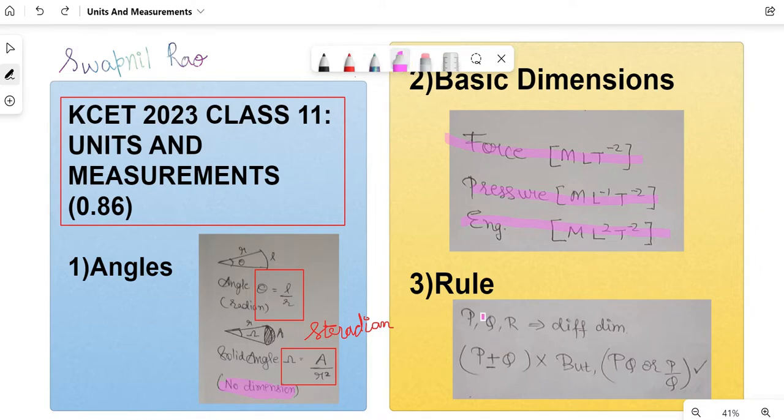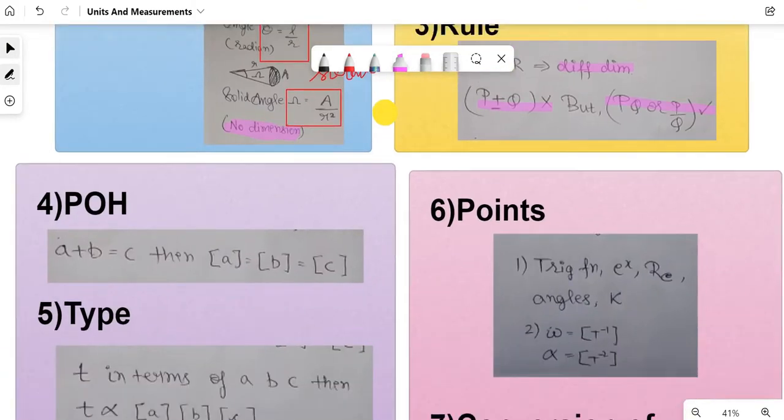Next would be a rule that you have to keep in mind. If P, Q, R are of different dimensions, then addition or subtraction of the two quantities is not possible. However, multiplication or division of them is actually going to be possible.